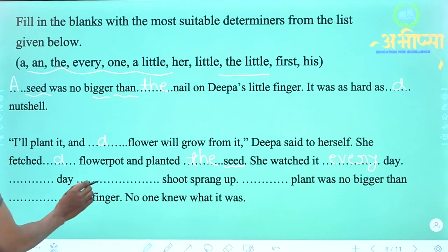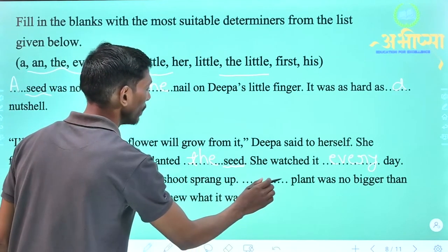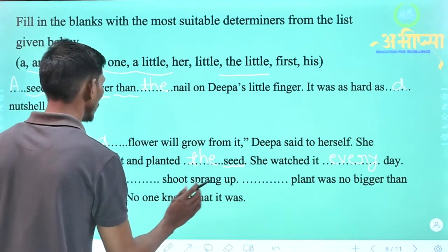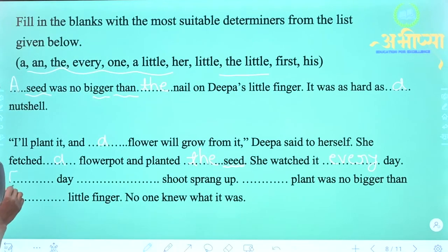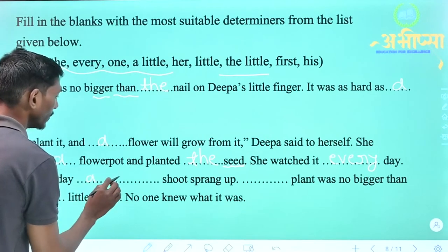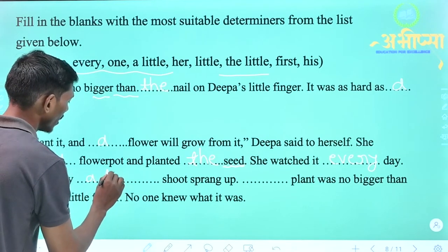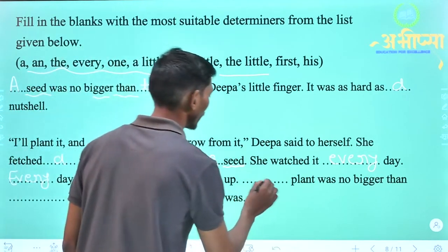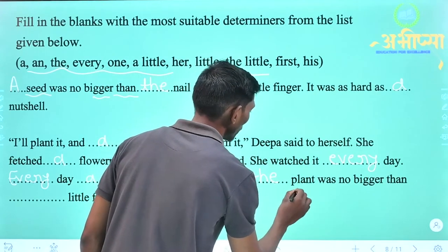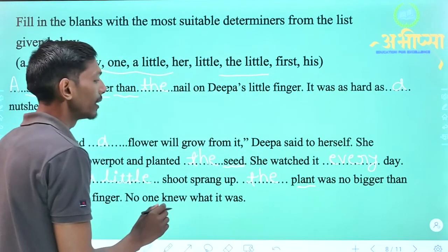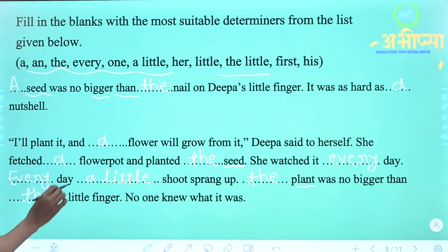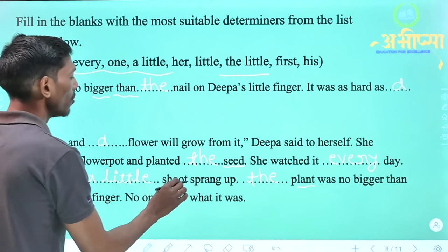'Every day ___ shoot sprang up. ___ plant was no bigger than ___ little finger. No one knew what it was.' Pehle blank mein 'a' aayega — 'a little shoot sprang up.' Doosre blank mein 'the' aayega — kyunki 'plant' word repeat hua hai. 'The plant was no bigger than.' Teesre blank mein 'the' aayega — 'the little finger.'